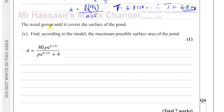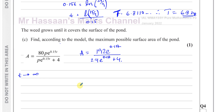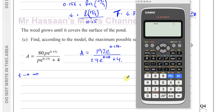Part C says: the weed grows until it covers the surface of the pond. Find, according to the model, the maximum possible surface area of the pond. So we have A equals 192·e to the power of 0.15t, over 2.4·e to the power of 0.15t plus 4. We want to find the value of A when t becomes really large — the limit A approaches as time gets very big. It's only worth one mark, so you can just write the answer down. I'll show you how to get the answer first, then explain the reasoning.